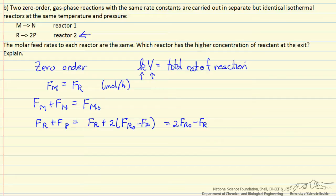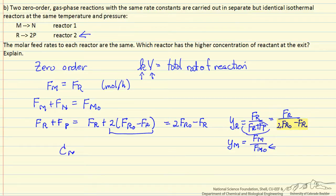At the exit of the first reactor, molar flow rate of M plus N equals the initial molar flow rate. For the second reactor, the molar flow rate leaving is larger because of the increase in number of moles. Therefore the mole fraction of R, which is FR over F total, which is FR over FR plus FP, equals FR over 2FR0 minus FR, using stoichiometry. So YR is less than YM, which is FM over FM0, and because this number is smaller, the concentration of M is greater than the concentration of R. Therefore, reactor one has the highest concentration of reactant.